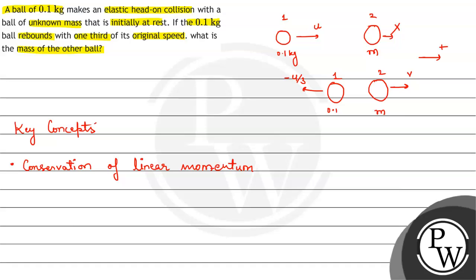Conservation of linear momentum states that the net momentum of the system initially, pi, is equal to the net momentum of the system finally, pf. The second key concept is: since we are given an elastic head-on collision, in an elastic collision we have conservation of kinetic energy.